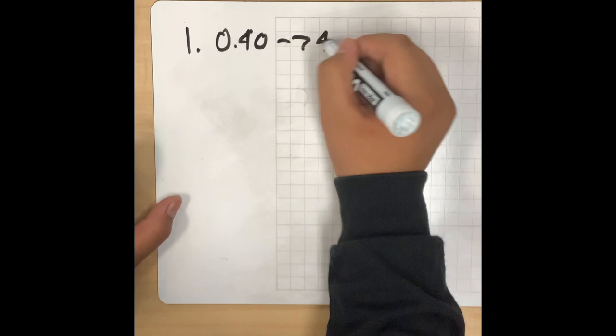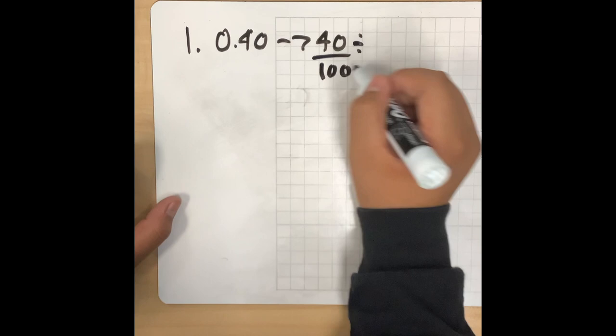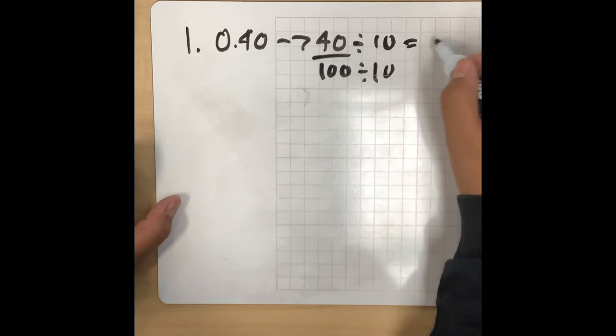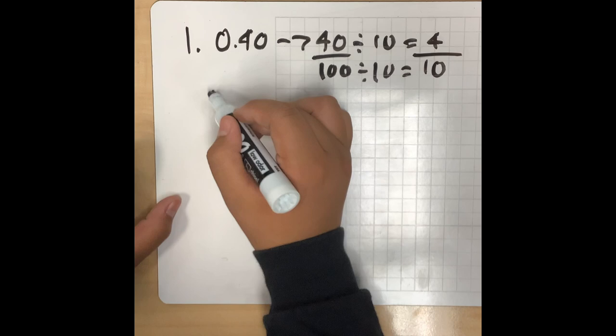Number one. 0.40. Take that to 40 over 100. Then what you want to do is you want to divide that by 10 to get 4 over 10.